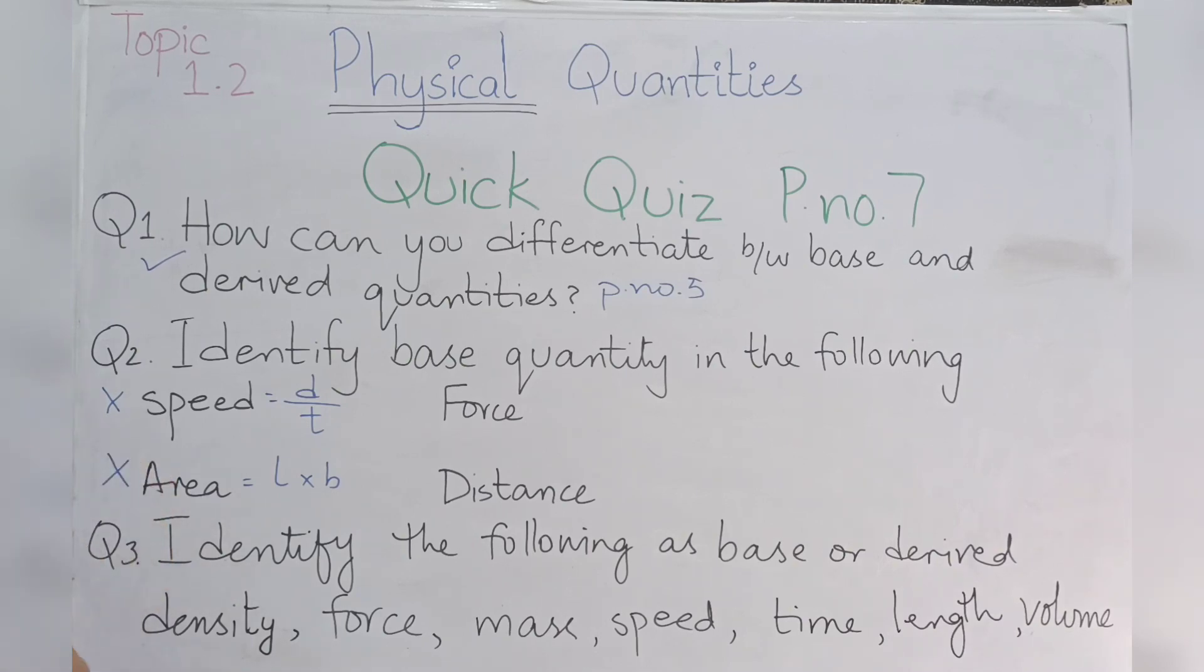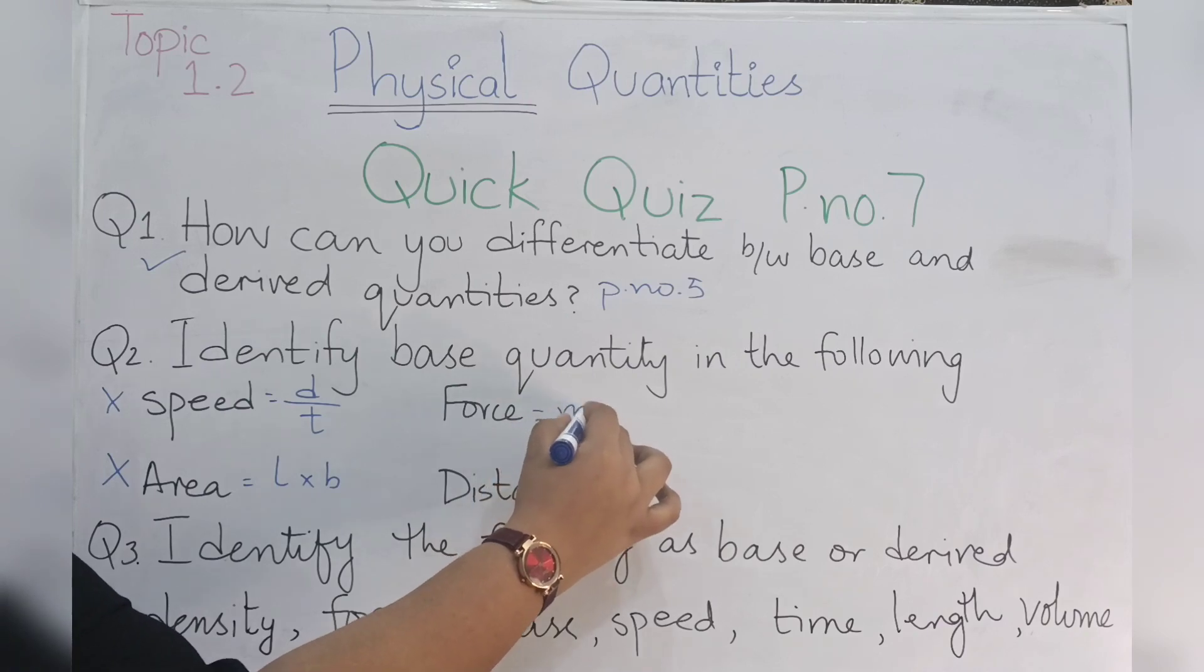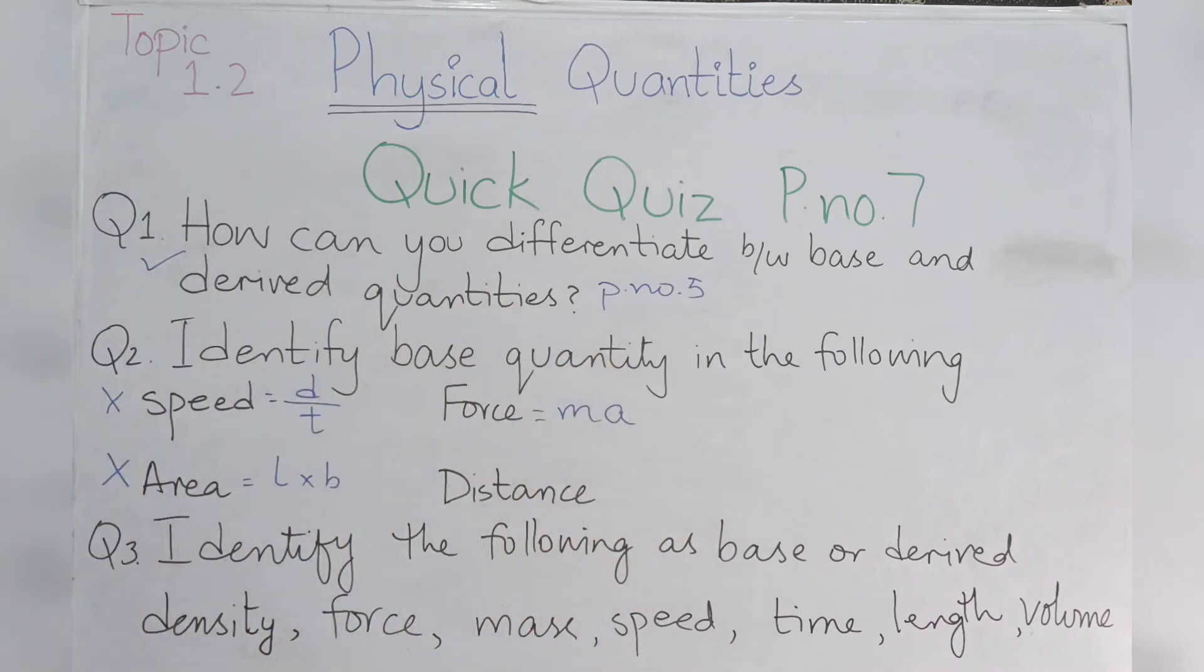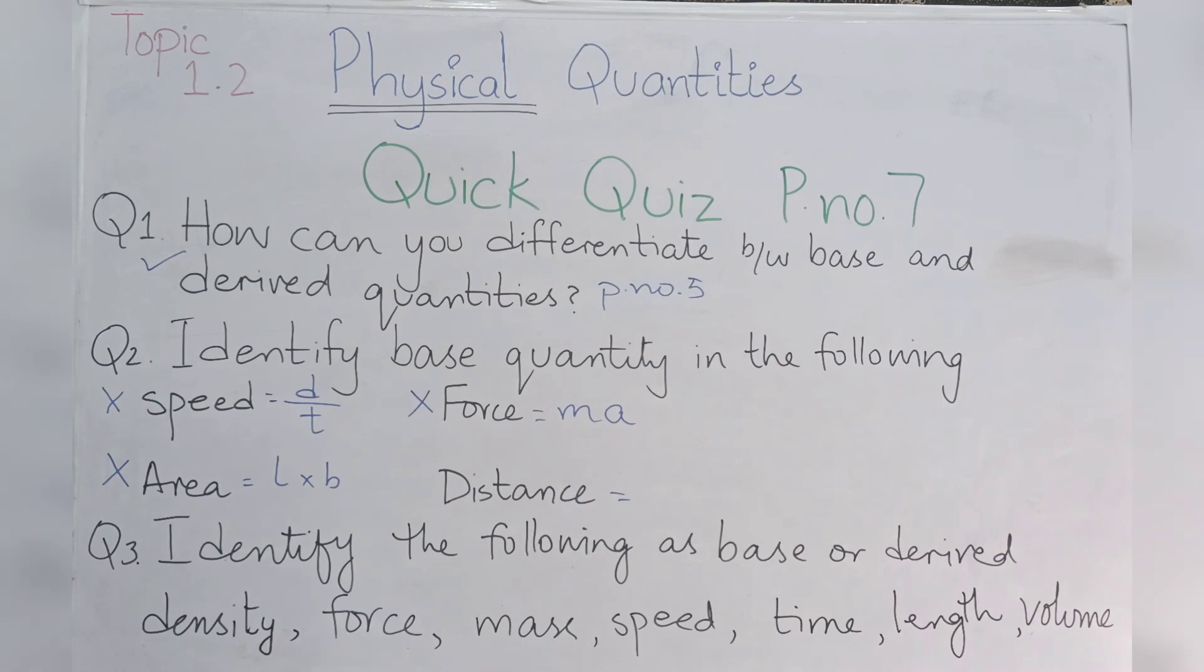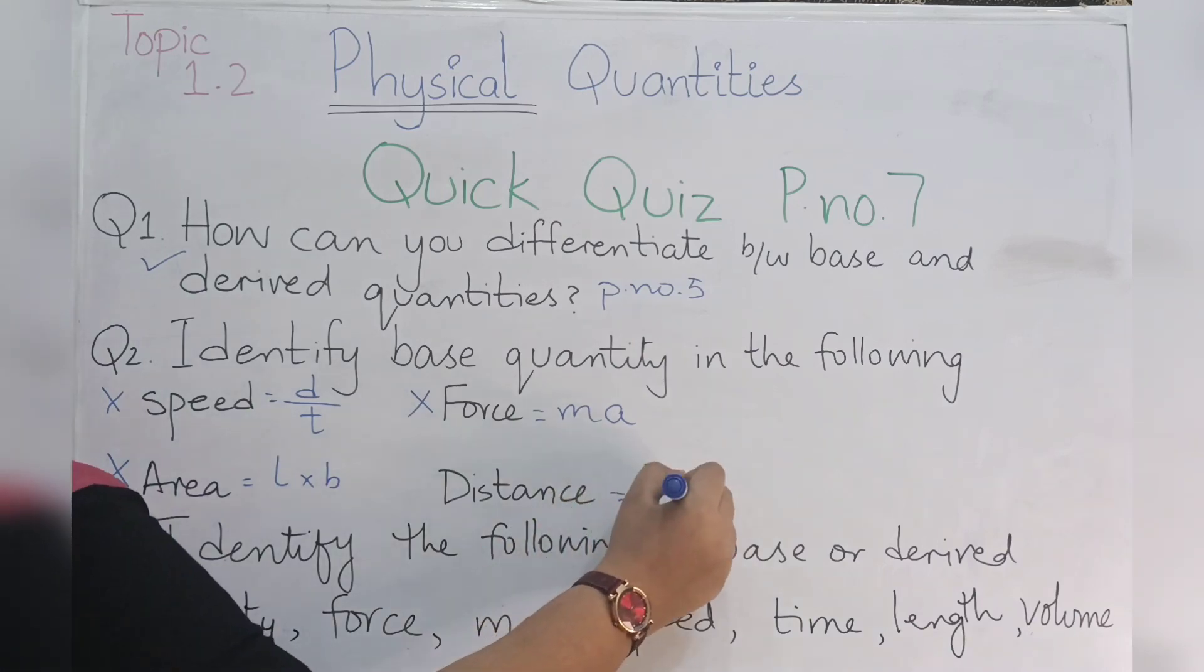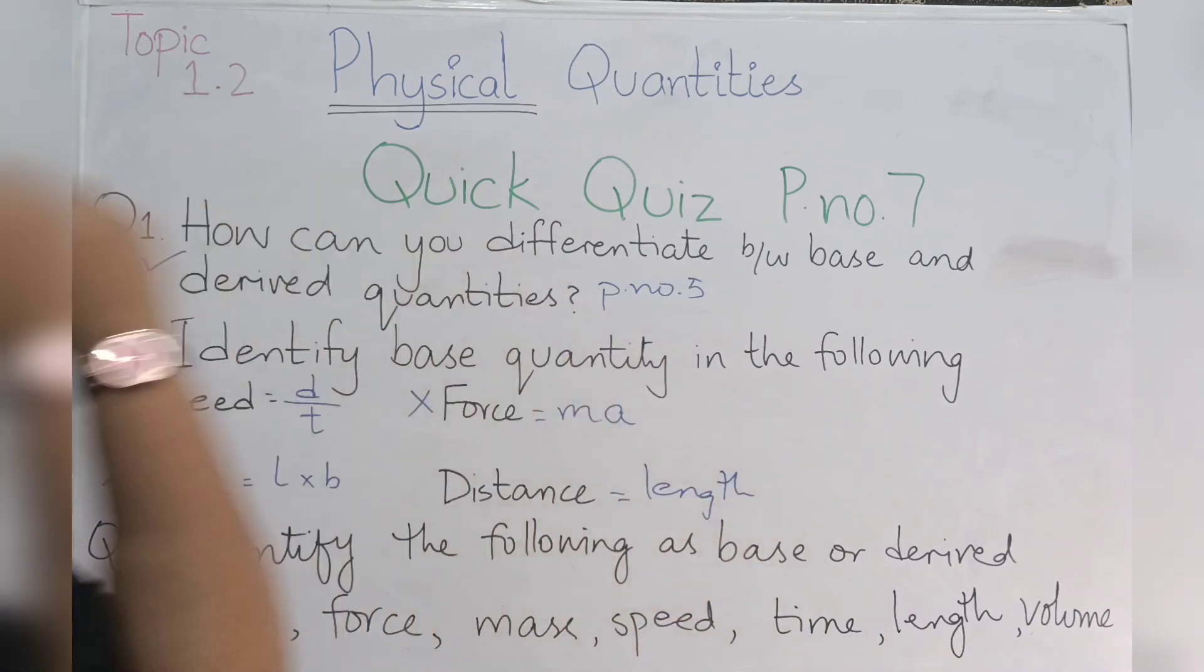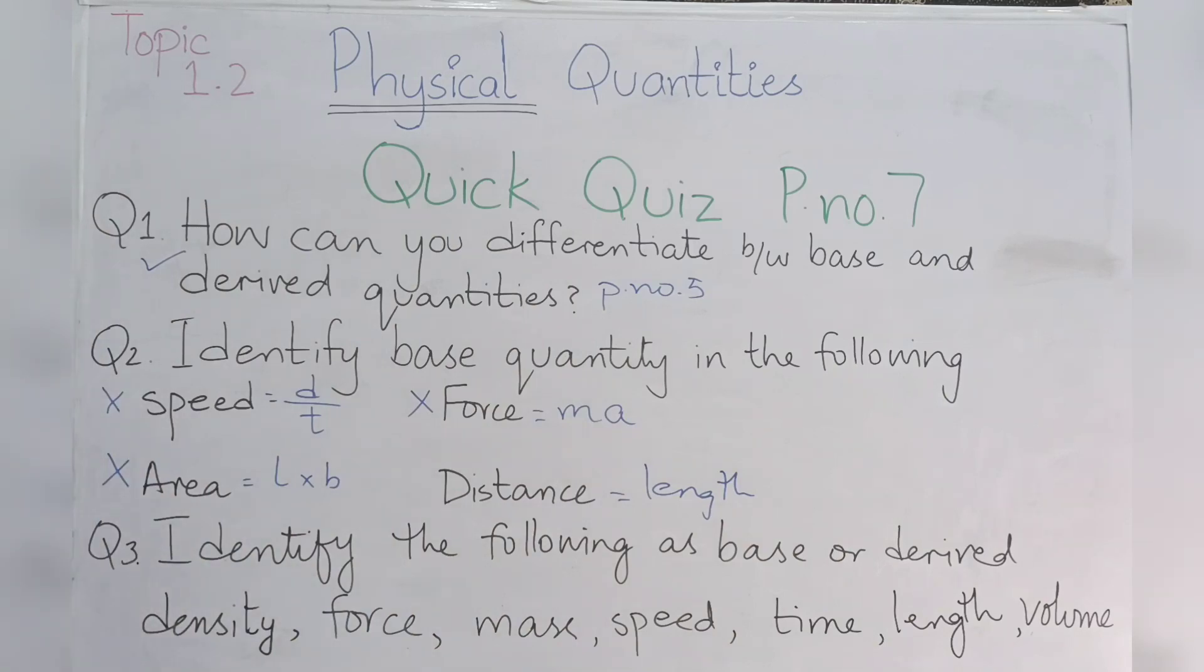Third one is force. The formula for force is mass into acceleration. Again, mass is a base quantity, so force will cross out. The last option is distance. Distance is basically the length between two points. So distance is basically the length.